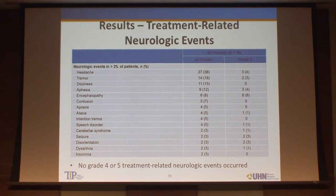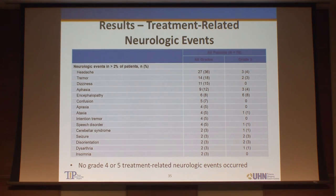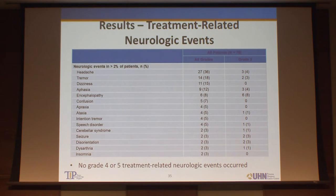Looking at all treatment-related AEs, noting terminology issues when including all of them: importantly, no grade 4 or grade 5 neurologic AEs. When adding up grade 3 events, it ends up being roughly in the 10–12% range. Encephalopathy was the most common with six patients — 8%.